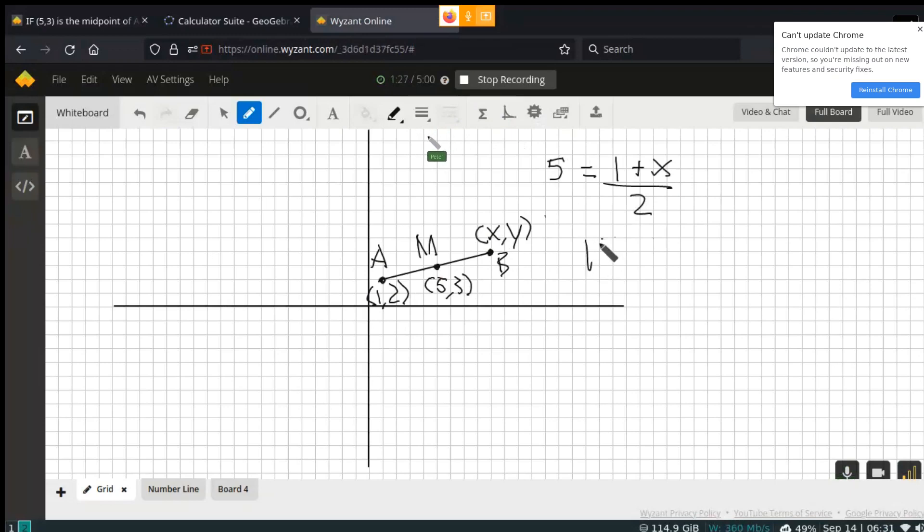If we solve, we multiply both sides by 2. 10 is equal to 1 + x. Subtract the 1 over, we have 9 is equal to x. And we can do the same thing, another application of the midpoint formula.